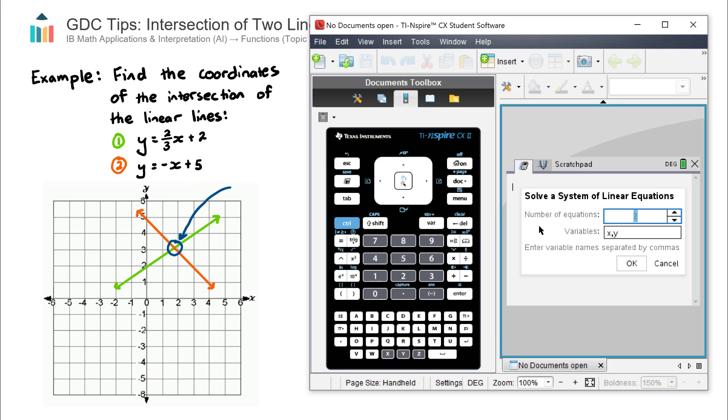Then you enter your variables. Now our equations do have X's and Y's. If yours had, say, A's and B's, you can delete these out using your keyboard here and replace them with A's and B's with a comma between, but I'm not going to change these because our equations here do have X's and Y's. We then hit OK.